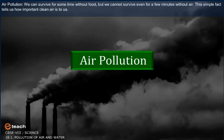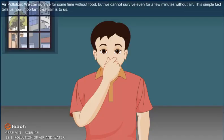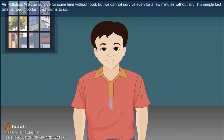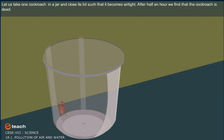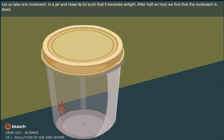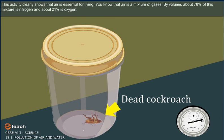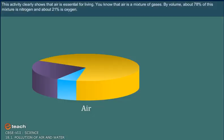We can survive for some time without food, but we cannot survive even for a few minutes without air. This simple fact tells us how important clean air is to us. Let us take one cockroach in a jar and close its lid such that it becomes airtight. After half an hour, we find that the cockroach is dead. This activity clearly shows that air is essential for living.